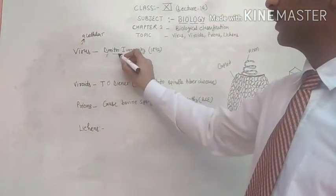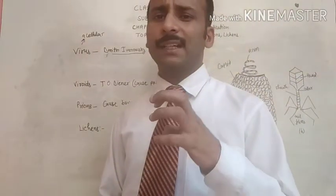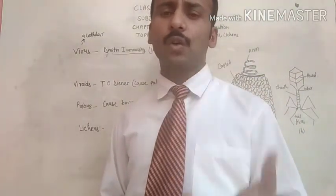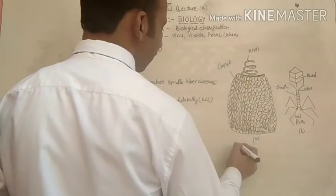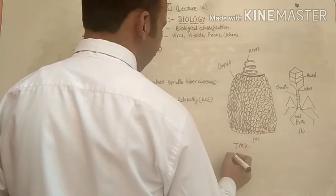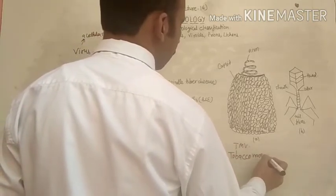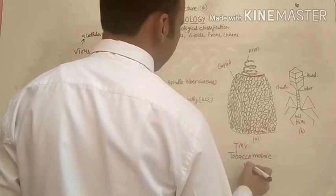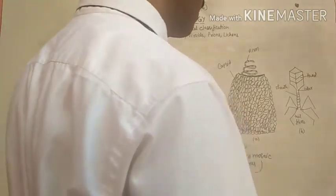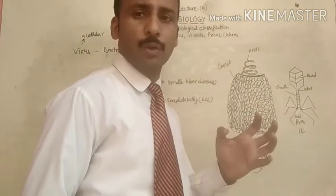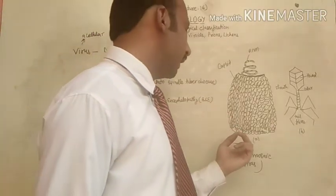First of all, viruses were discovered by Ivanovsky. He observed that few diseases are caused by viruses. For example, this is the diagram of one virus — this is called TMV, Tobacco Mosaic Virus, which causes disease in the tobacco plant, and that is why this name is given.